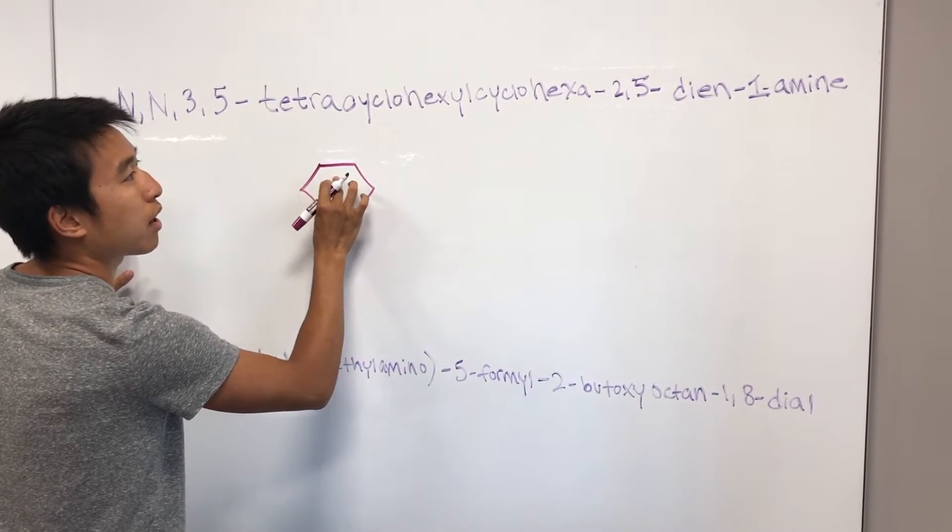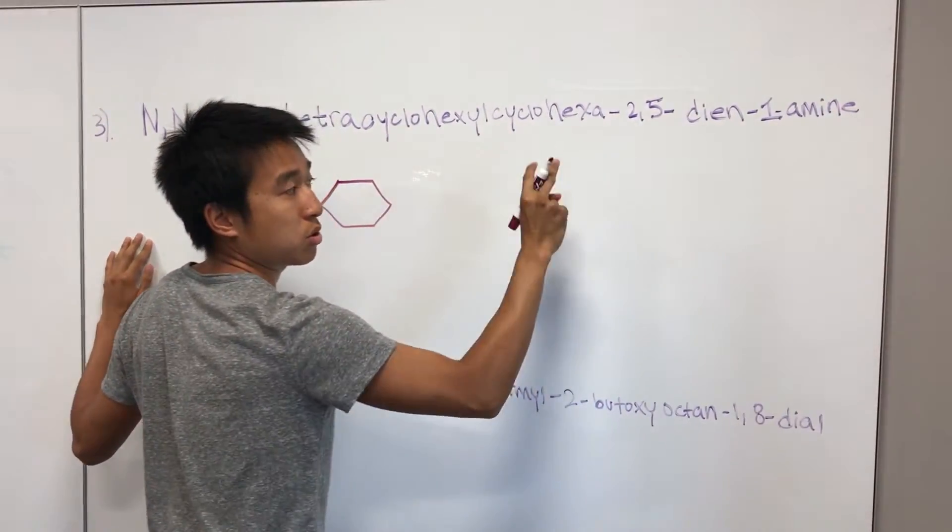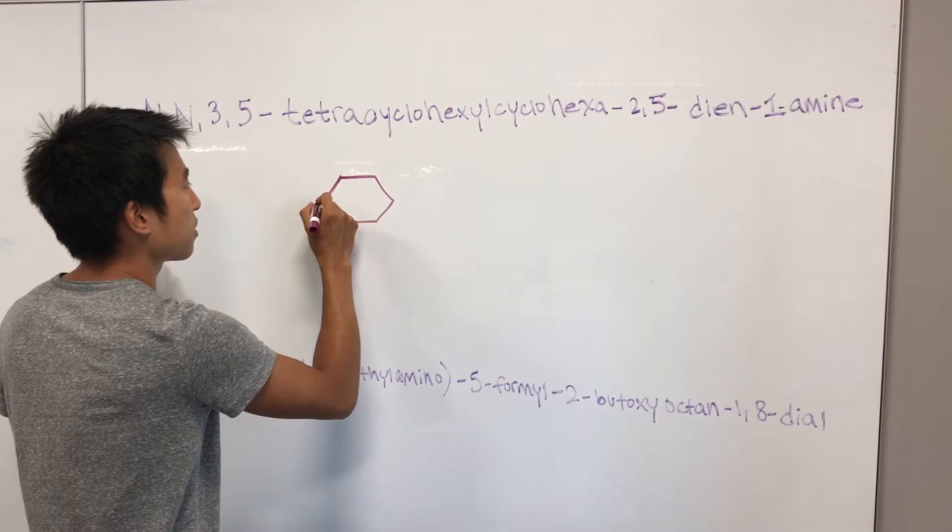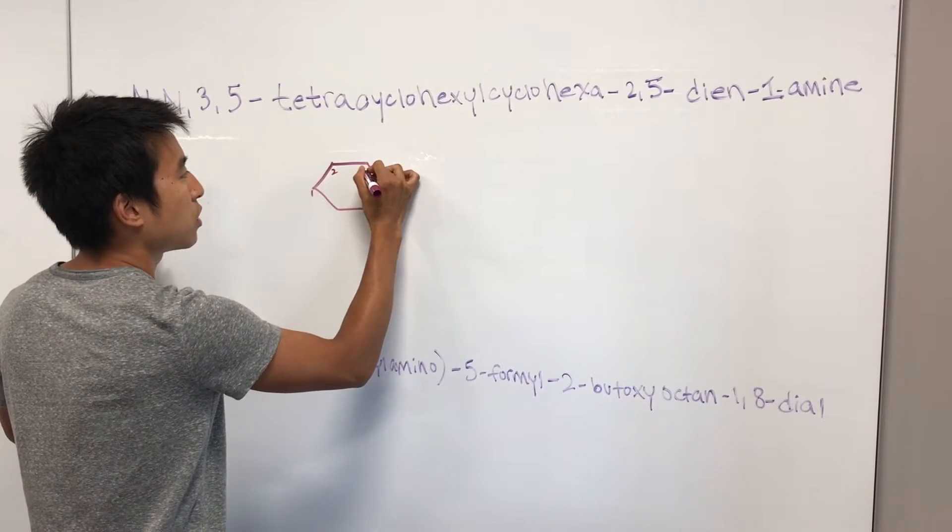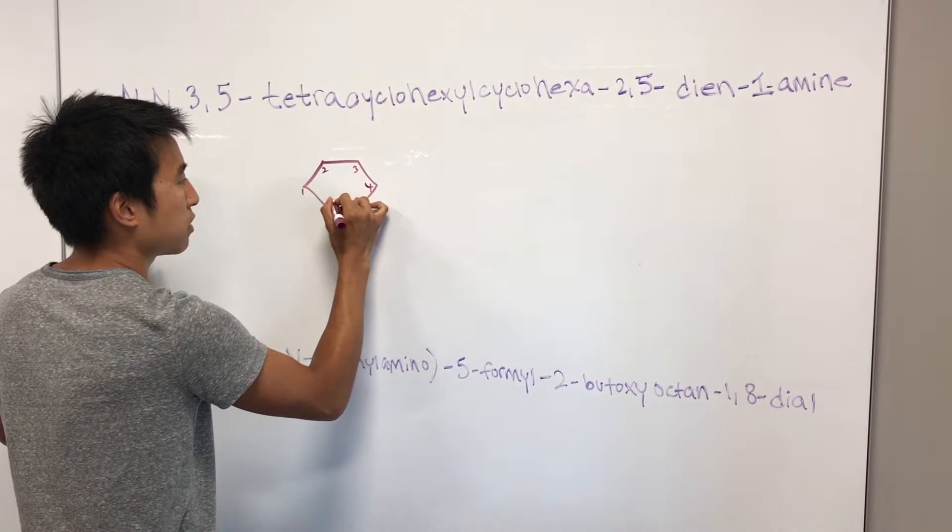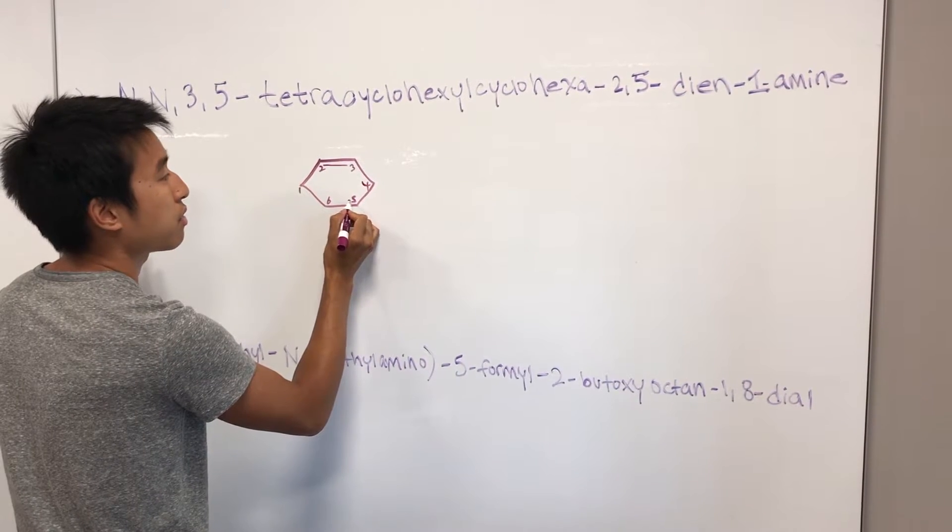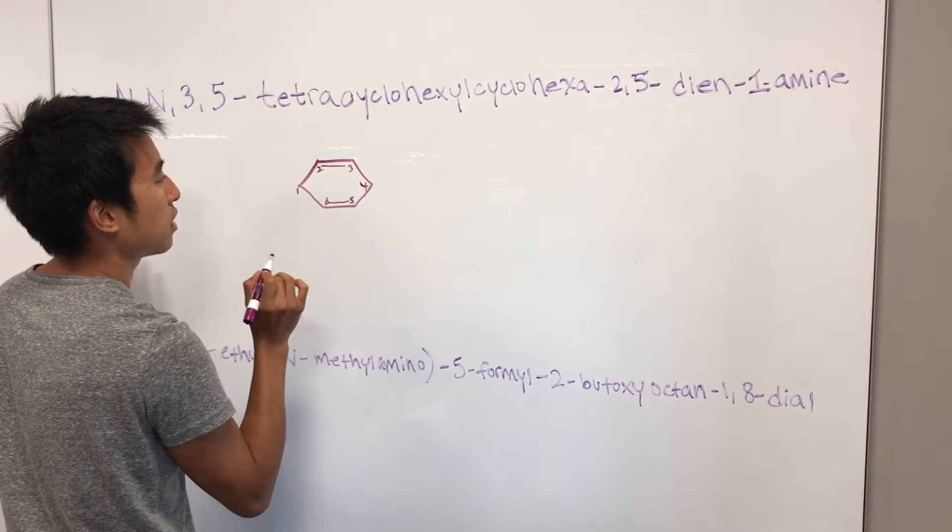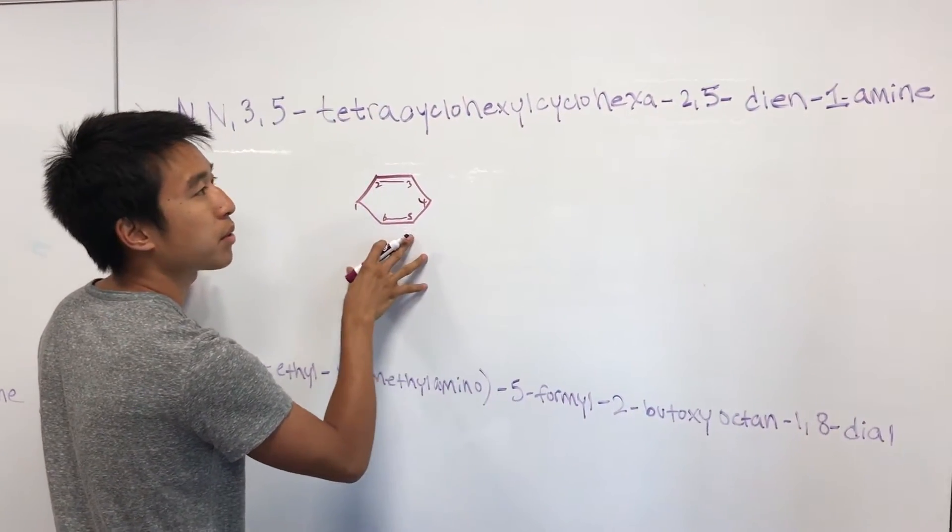So I'll do it this way. Cyclohexa. And then on carbons two and five, we have dienes. So two alkenes. I'll just make this carbon one. So one, two, three, four, five, six. So the ene starts at two, goes to three. Starts at five, goes to six. Not the prettiest, but yeah, here we go.